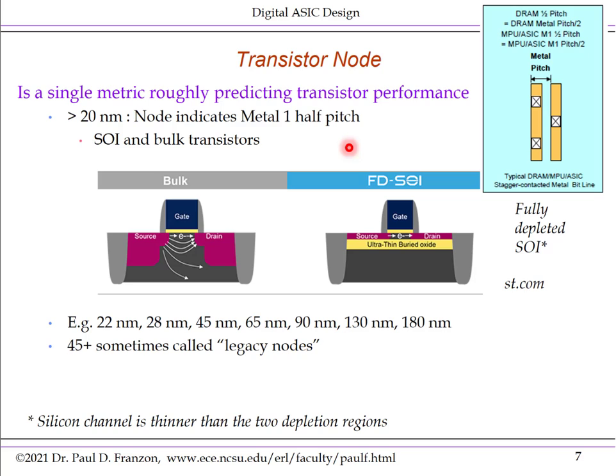However, what a node exactly means has changed over time. For nodes identified as 20-nanometer or above, the node indicates the metal one half-pitch. Here we have two wires in metal one; the pitch is illustrated, and you can see the half-pitch is approximately the metal width — though the actual metric is half-pitch. Above 20-nanometer, it actually relates to a physical geometry in the layout of the circuit being fabricated.